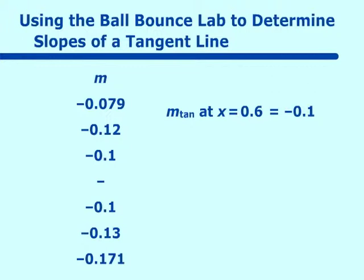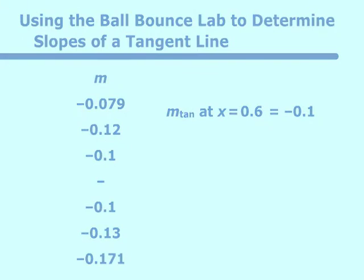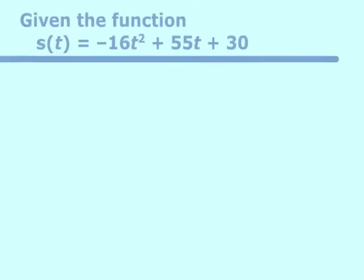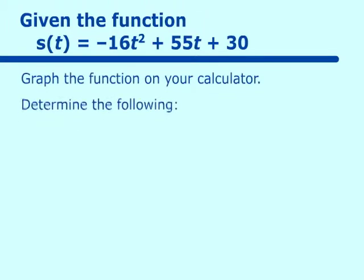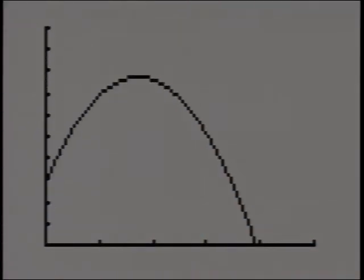And that we have figured out by coming closer and closer in to our values. This is just one way to figure out what that slope of the tangent line is. Eventually, we'll learn other ways. Well, how do we use this? That becomes the next question. So here's a problem. Given the function, s of t is equal to negative 16t squared plus 55t plus 30. Graph the function on your calculator and then determine the following.